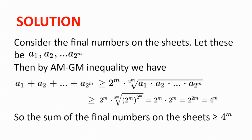We'll now consider the final numbers on the sheets and let these be A1, A2, A3, all the way to A sub 2 to the power of m. Then by the AM-GM inequality, we have that the sum of the final numbers on the sheets is greater or equal to 2 to the power of m, multiplied by the (2 to the power of m)-th root of the product of all the final numbers on the sheet. But we already have an inequality dealing with the product of the final numbers, and so we know that this expression is greater or equal to 2 to the power of m multiplied by the (2 to the power of m)-th root of 2 to the power of m to the power of 2 to the power of m, which equals 4 to the power of m.